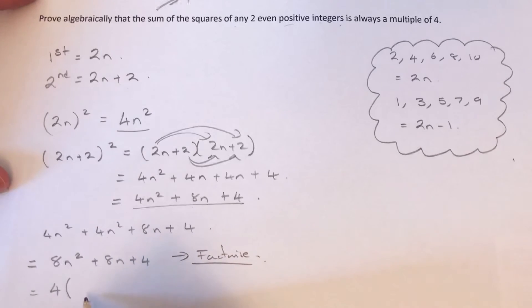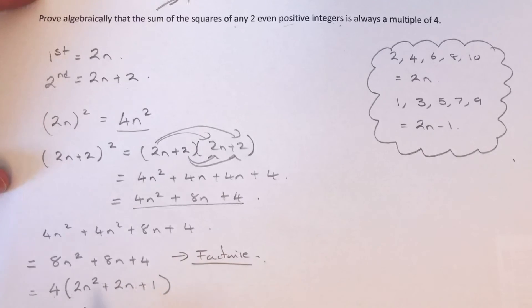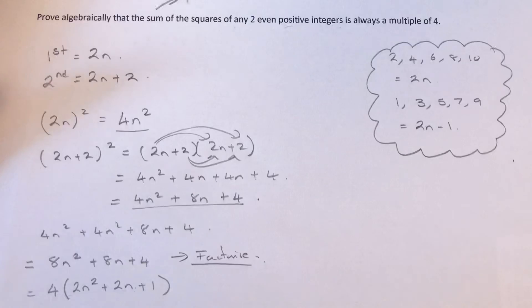So we've got 4 times bracket 2n² plus 2n plus 1. So I've just divided all these by 4 here inside the bracket. And since we've got the 4 here, this proves that this expression is a multiple of 4. Hence we've proved this proof here.